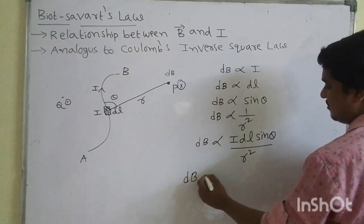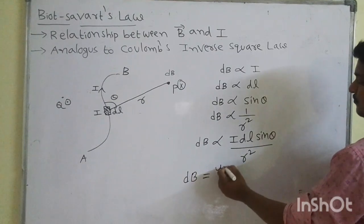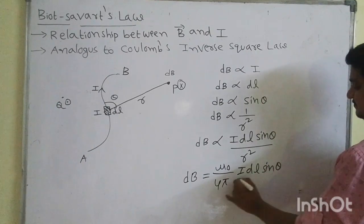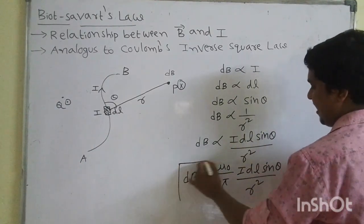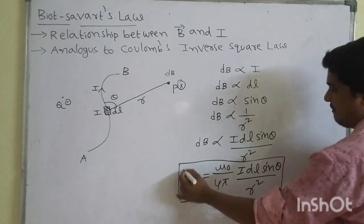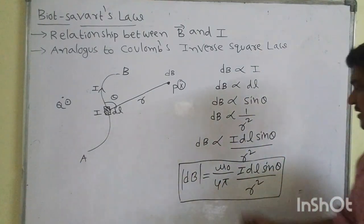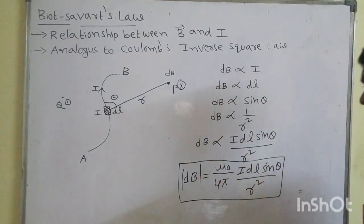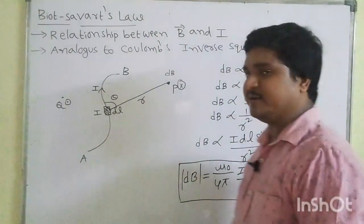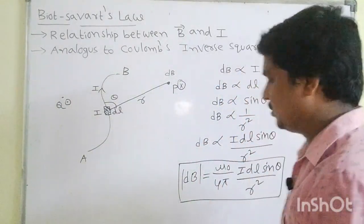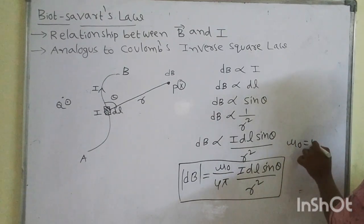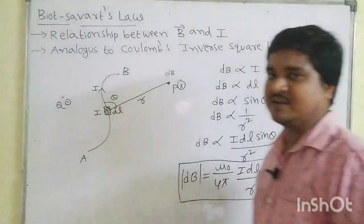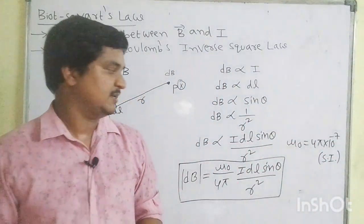To balance this formula, we can write: dB = μ₀/4π · I·DL·sinθ / r². This is the Biot-Savart law formula — the magnitude of the magnetic field induction. Here μ₀/4π is a constant. μ₀ is the permeability of free space or vacuum. The value of μ₀ is 4π × 10⁻⁷ in SI units.